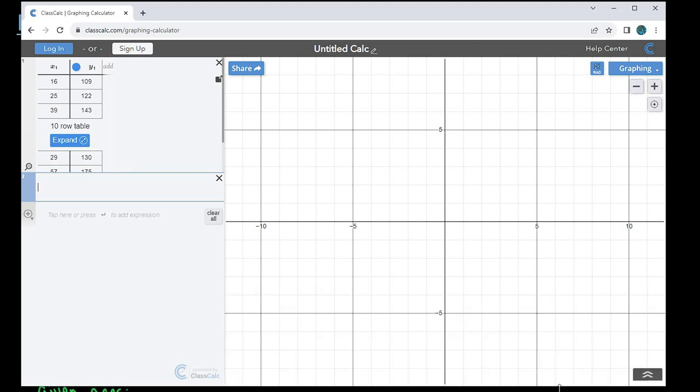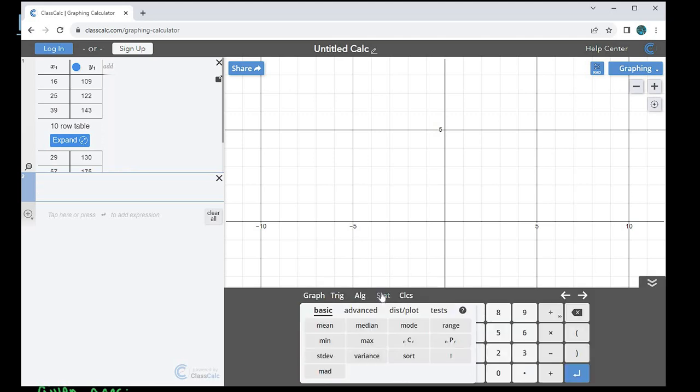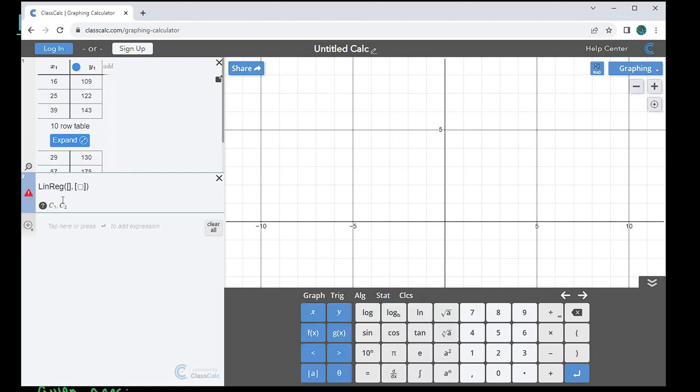To find that, if this menu is not up for you, you would do the double arrows and go to stat, then go into advanced, and we can see that linear regression is the very first one. When I hit this, it will bring up that I need to know which column my data is in. I would just hit x1 for the first column and y1 for the second column, and it automatically places the subscript when I type in the x followed by the one.